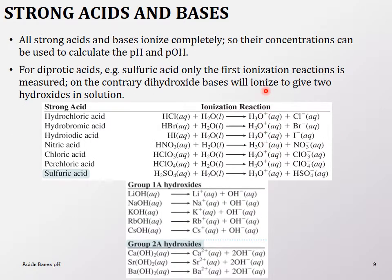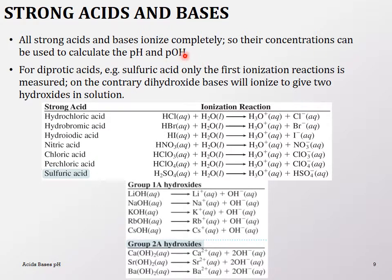Strong acids and strong bases ionize completely, so their concentrations can be used directly to calculate pH and pOH. For example, a 1.0 molar HCl solution uses that 1 molar directly for pH calculation. A 2 molar sodium hydroxide solution uses 2 molar to calculate pOH. This applies to complete ionization; weak acids and bases will be discussed separately.